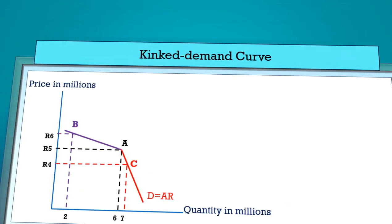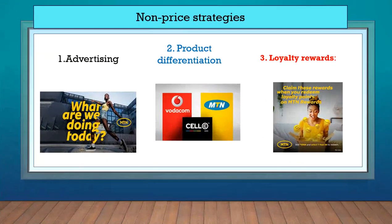So oligopoly firms use non-price strategies. There are three non-price strategies. Since they cannot compete on price, they have to compete in other ways. They compete using advertising to say, we are better in this way, so you should use our product.